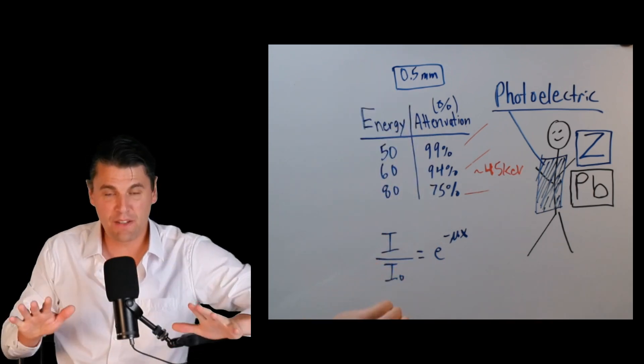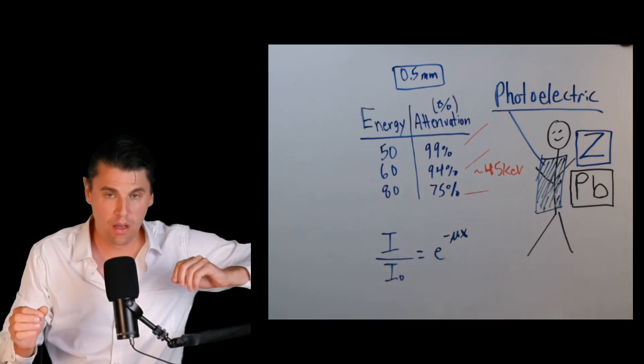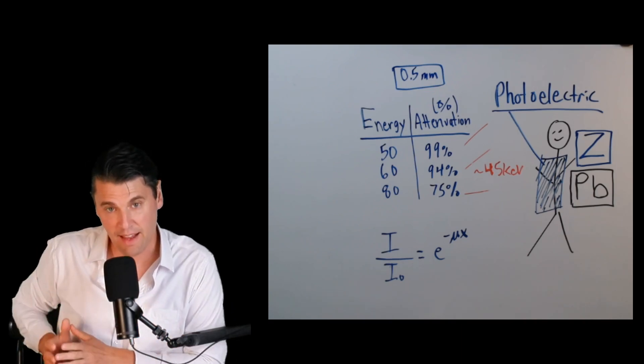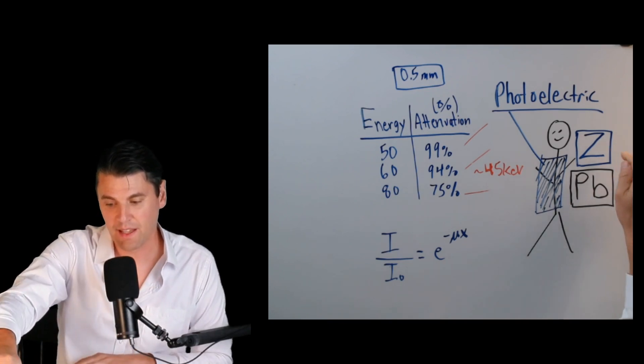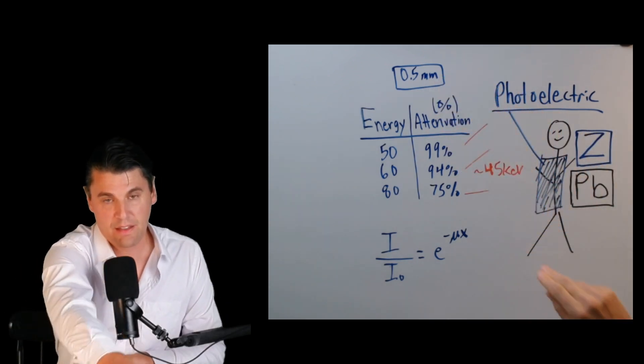That's why the answer to the question of what material do we use predominantly for protection in radiation, especially in the diagnostic radiation. For you as a technologist, we're using lead because it has a high Z and the thickness we're using is 0.5 millimeters.